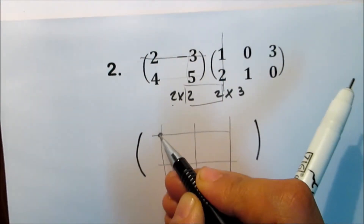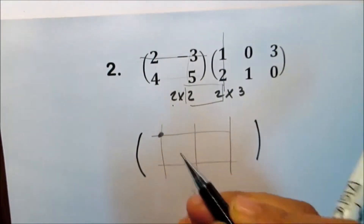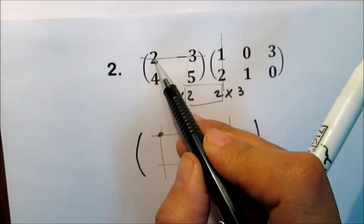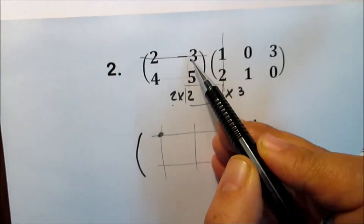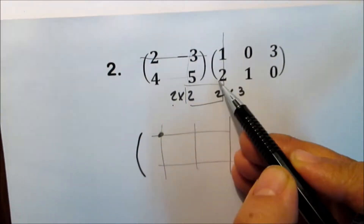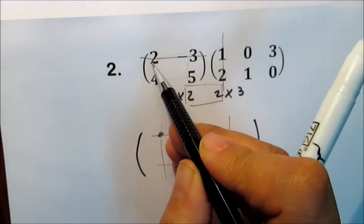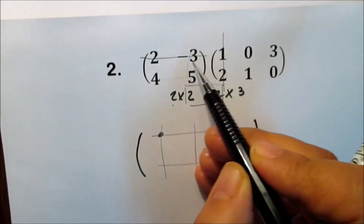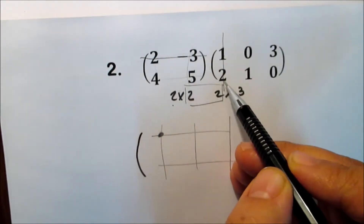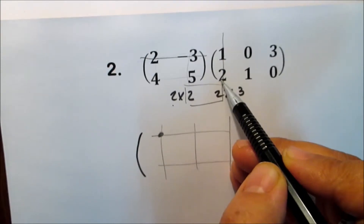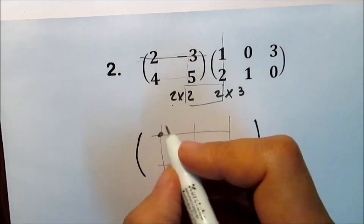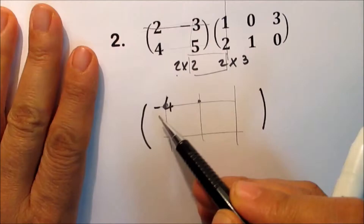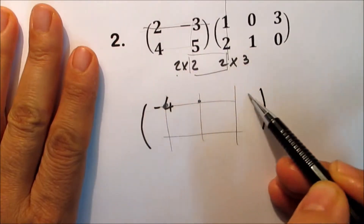Start with the first row here and the first column here to get the first element in the new matrix. Take the first here times the first here, plus the second here times the second here. So two times one is two, and negative three times two is negative six. Two minus six equals negative four.